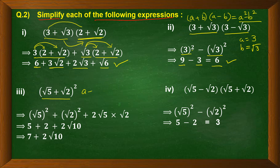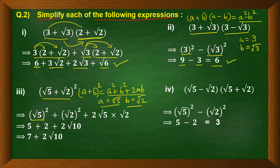The third part is (root 5 + root 2) squared. This resembles identity 1: (a + b)² = a² + b² + 2ab, where a = root 5 and b = root 2. Substituting: (root 5)² + (root 2)² + 2 × root 5 × root 2 equals 5 + 2 + 2 root 10, since root 5 × root 2 = root 10. So the final answer is 7 + 2 root 10.